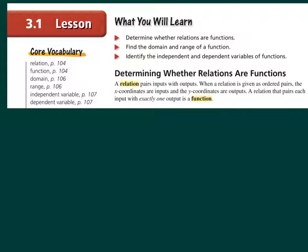Determining whether relations are functions: a relation pairs inputs with outputs. When a relation is given as ordered pairs, the x-coordinates are the inputs, the y-coordinates are the outputs. A relation that pairs each input with exactly one output is a function. So basically for every x, there's a new y. You can't have x1, y1, and then also in that function have x1, y2.